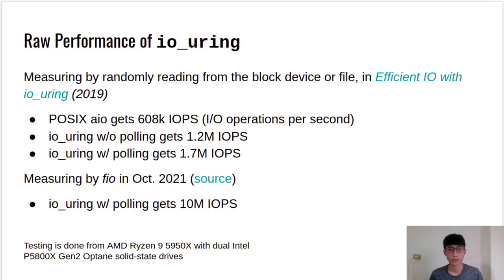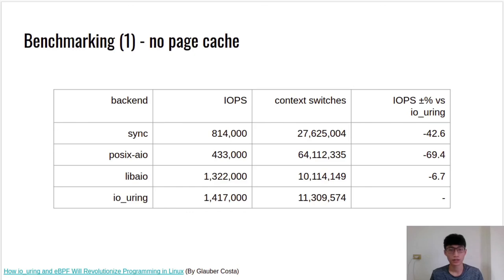In this page, we will show some performance results done by the author of io_uring. We show statistics measured in 2019. The performance of io_uring is measured by random writes from a block device or file. POSIX AIO gets 608K IOPS. io_uring without polling gets 1.2 million IOPS, and io_uring with polling gets 1.7 million IOPS. There is also a statistic measured by FIO in October 2021: io_uring with polling gets 10 million IOPS. Another benchmarking result uses the well-known FIO utility to evaluate four different interfaces: synchronous read, POSIX AIO, Linux AIO, and io_uring. The test is conducted on NVMe storage that should be able to read at 3.5 million IOPS. Using 8 CPUs to run 72 FIO jobs, each issuing random reads across four files with an I/O depth of 8, and ran the test with the direct I/O flag.